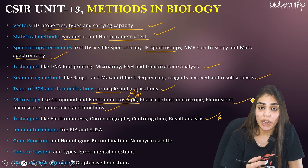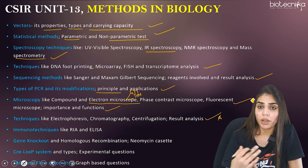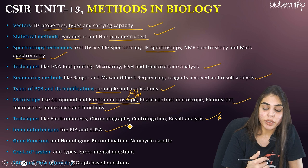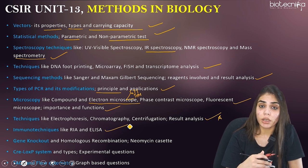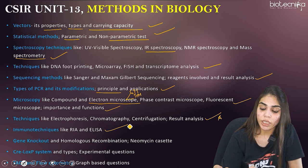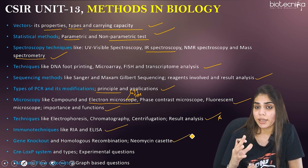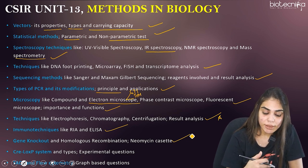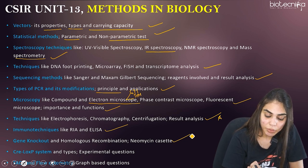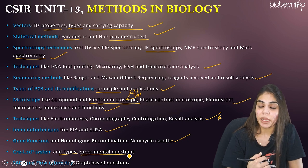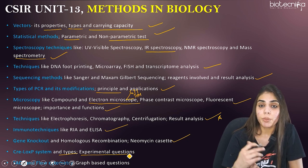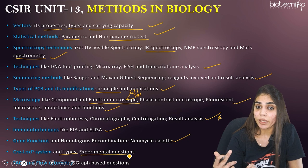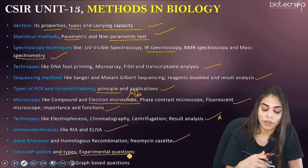Immunotechniques — RIA, ELISA, and immunodiffusion are all very important. Gene knockout — homologous recombination, neomycin, calcet, how a gene is actually knocked out, and interpreting experimental designs. Also the Cre-loxP system as an extension of gene knockout — know the experimental questions asked from this system, as you will be given an experimental design and asked to answer questions about the outcome.